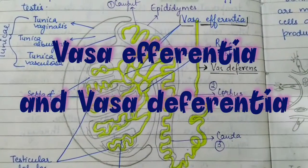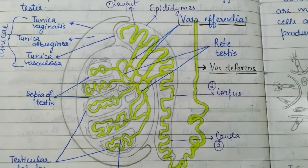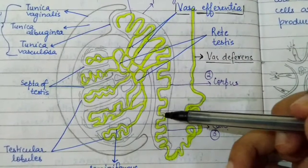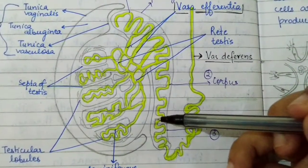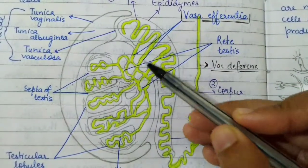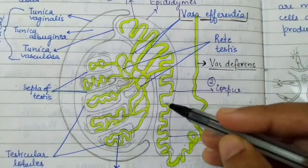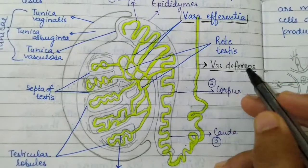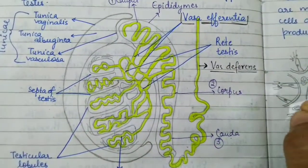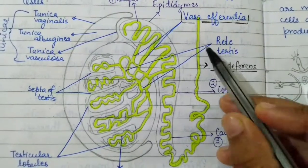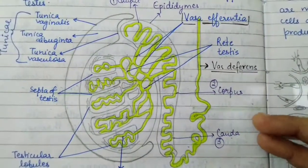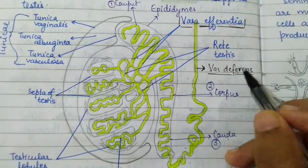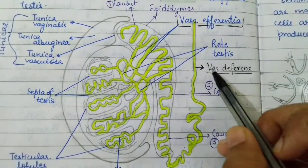In this video we are going to study the difference between vasa efferentia and vasa differentia. In this diagram, which is a transverse section of human male testes, we can see the vasa efferentia, while this single tube coming out from the cauda epididymis is called the vas deferens. Since there is a pair of testes, for a single tube we say vas deferens, but for two tubes we say vasa differentia.